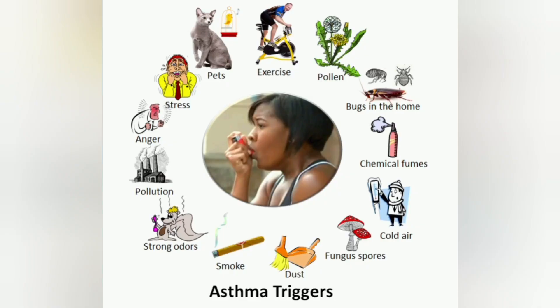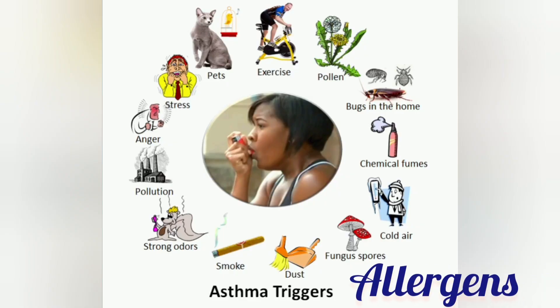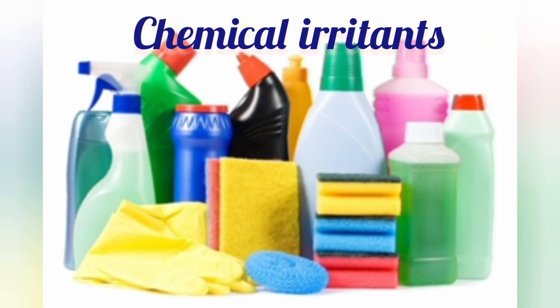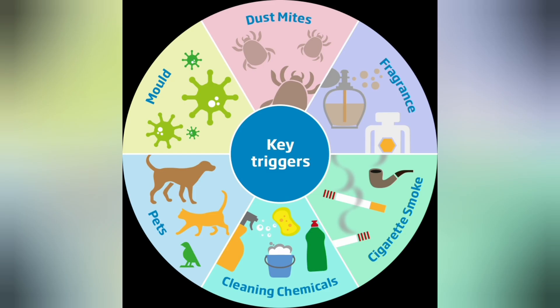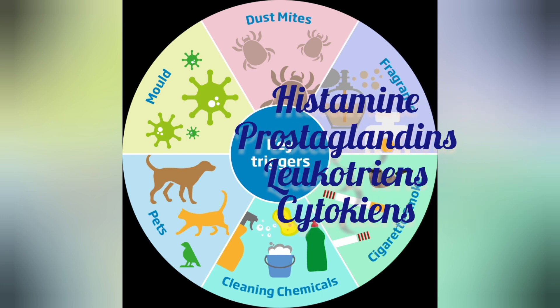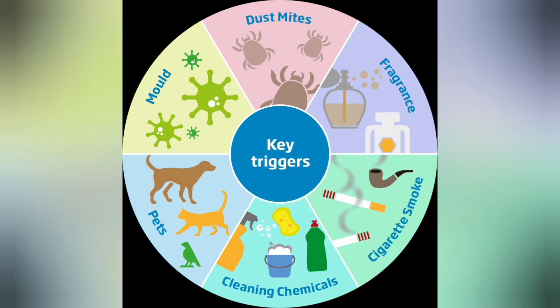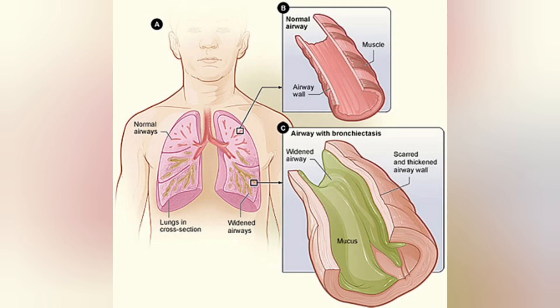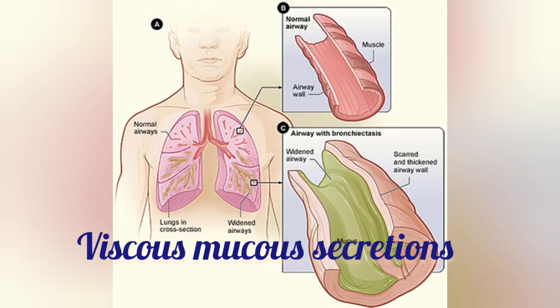Let's know about the pathophysiology of asthma. Asthma may be caused due to several factors like allergens and chemical irritants, which trigger the mast cells to release inflammatory mediators like histamine, prostaglandins, leukotrienes, and cytokines. These mediators cause bronchoconstriction, mucosal edema, and viscous mucus secretions, resulting in airway obstruction.